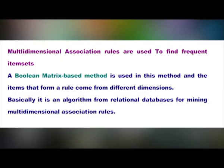Hello friends. In this module we will learn about multidimensional association rules. Multidimensional association rules are used to find the frequent item sets. A Boolean matrix based method is used here and the items that form a rule come from different dimensions. Basically, it is an algorithm from relational databases for mining multidimensional association rules.